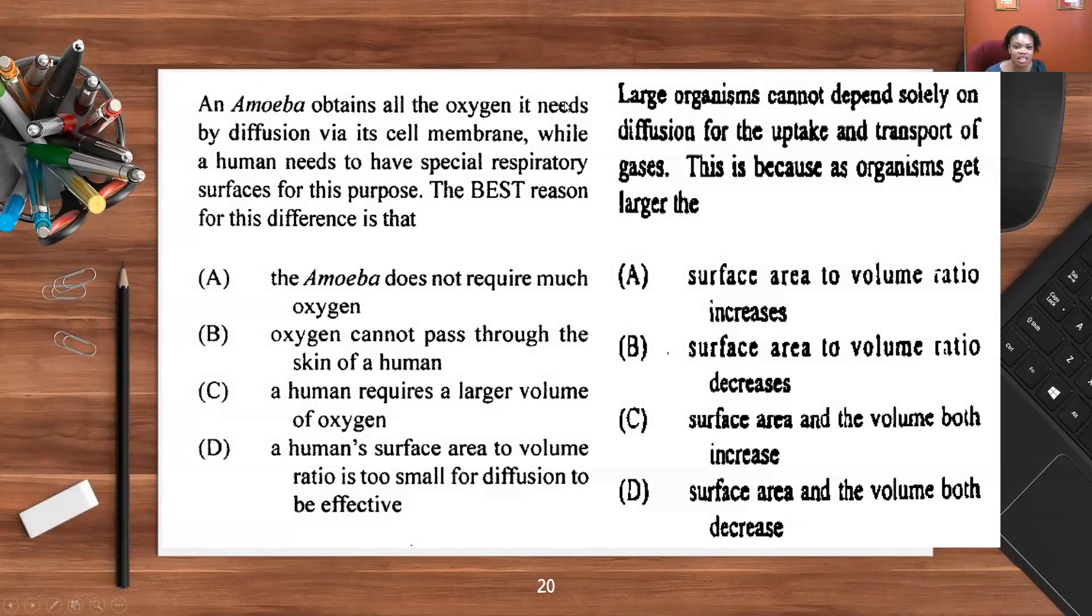An amoeba obtains all the oxygen it needs by diffusion via its cell membrane, while a human needs to have special respiratory surfaces for this purpose. The best reason for this difference is that A, the amoeba does not require much oxygen; B, oxygen cannot pass through the skin of a human; C, the human requires a larger volume of oxygen; or D, a human surface area to volume ratio is too small for diffusion to be effective. The answer is D. As we mentioned before, diffusion alone is not sufficient. Human beings and other large multicellular organisms, their surface area to volume ratio is too small. Therefore, they would need a transport system because diffusion alone is not effective.